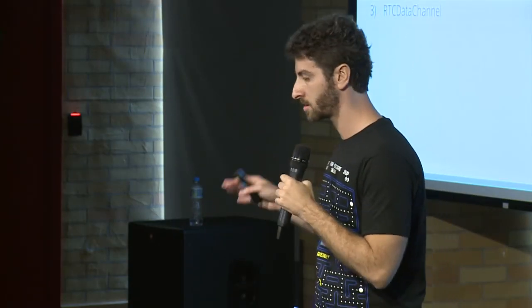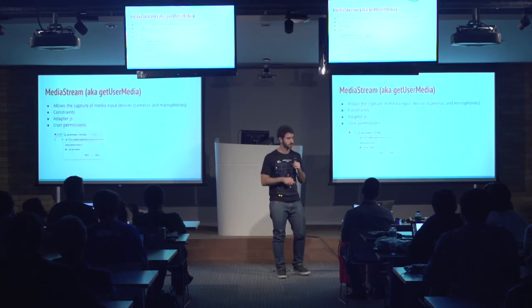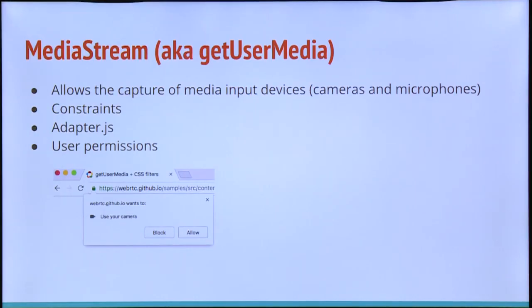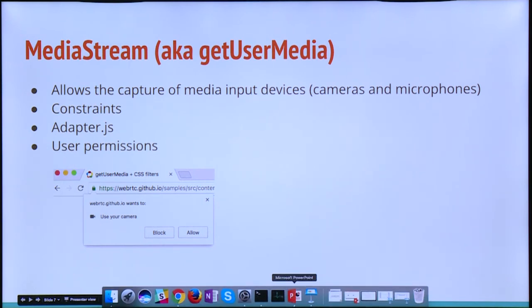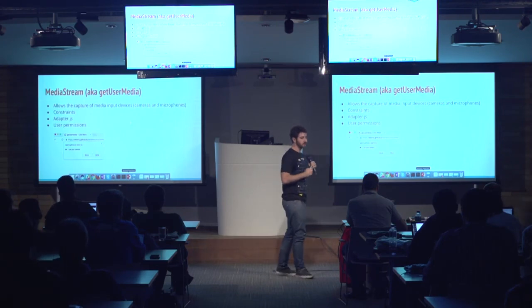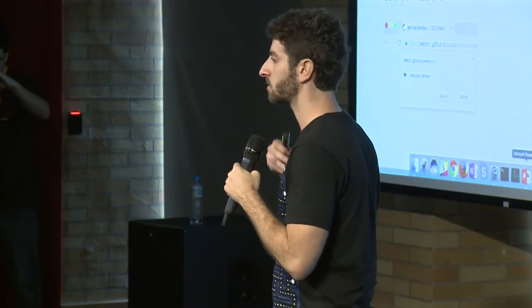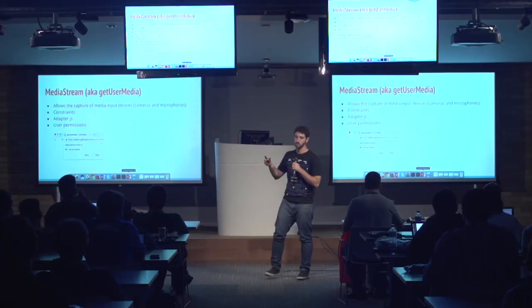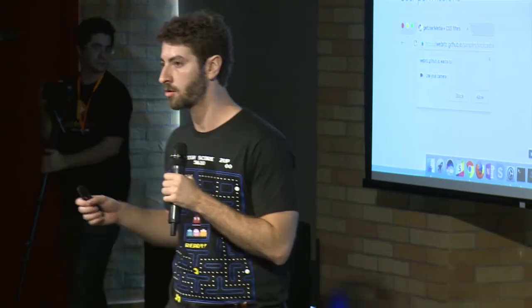I'm going to talk a little bit about these APIs individually. Let's start with the MediaStream, also known as getUserMedia. This API allows us to enable access to the camera and the microphone. There is one parameter that we need to pass to this API: the constraints. That is basically the way to say that I want access to the video, the audio, or both.